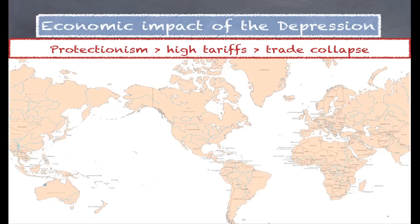Let's see how the crisis played out across the world. One thing was that a lot of countries around the world did something called protectionism. The idea was to protect the industries and businesses in your country by placing high tariffs — that is, high taxes — on imported goods from other countries. But what it led to was a collapse in international trade, which in the end actually hurt everybody.